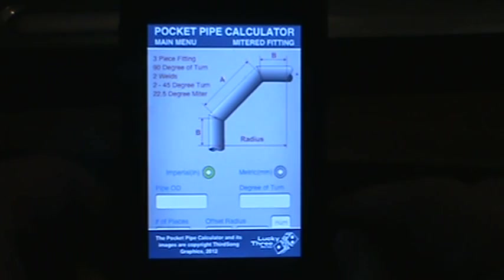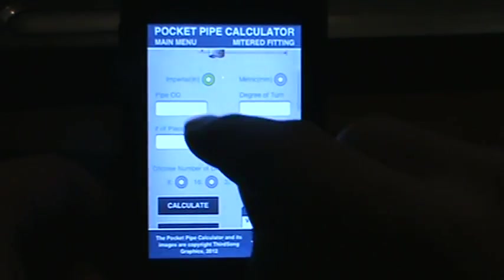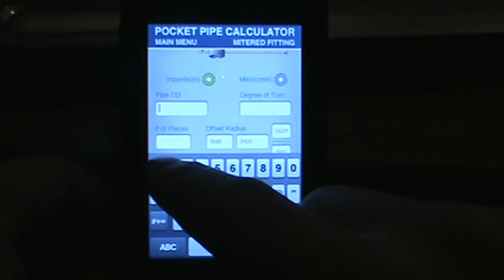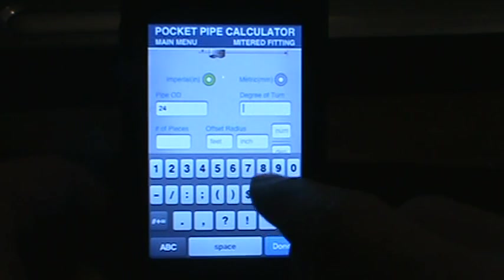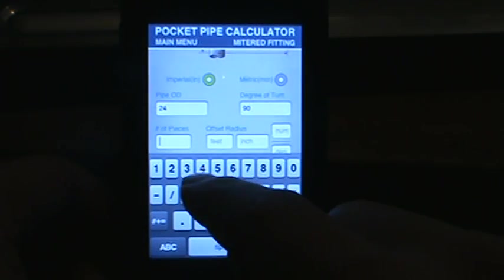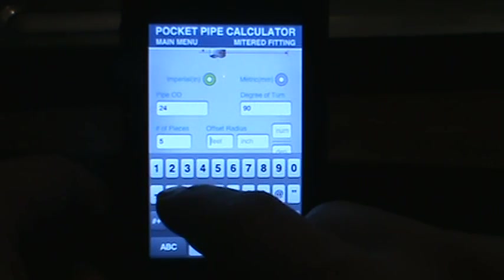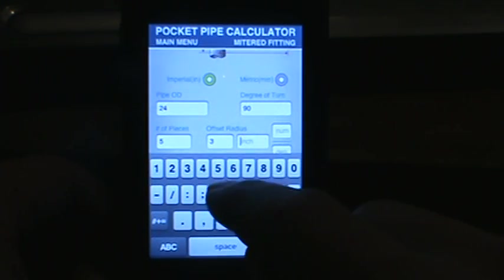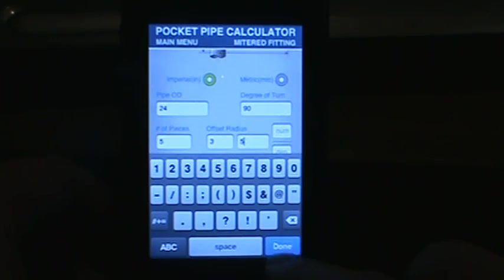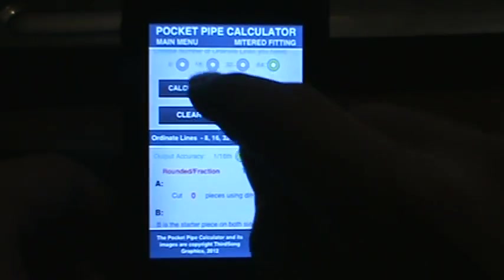So what we're going to do is we'll start here at the top. We'll do pipe OD of 24 inches and we'll do a 90. Let's do five pieces. We can do say three foot five as your radius. Hit calculate.